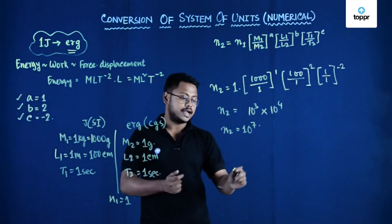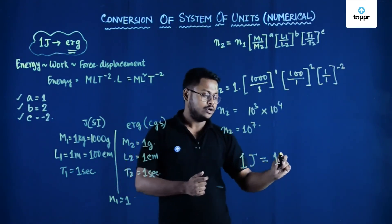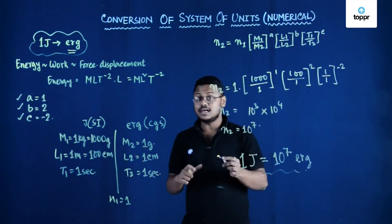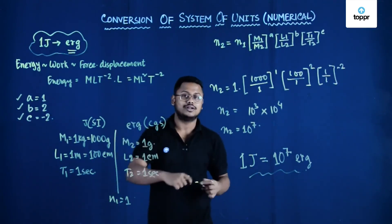So what we have got is that 1 joule is equal to 10 to the power 7 erg. So this is how we can convert a physical quantity from one system of unit to another.